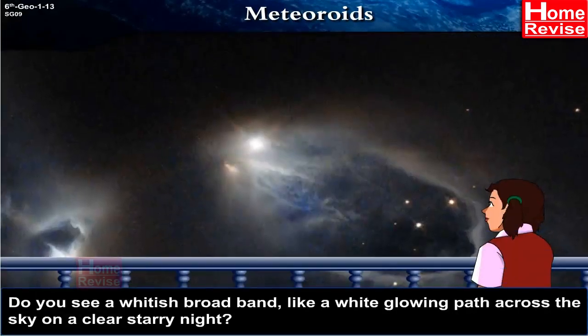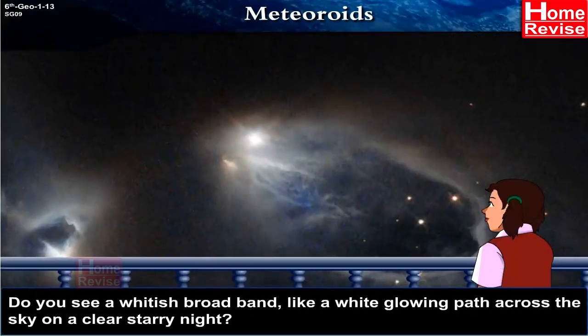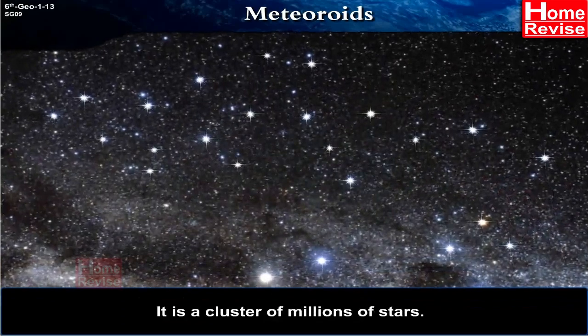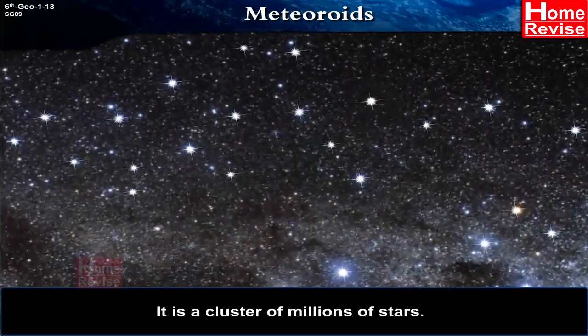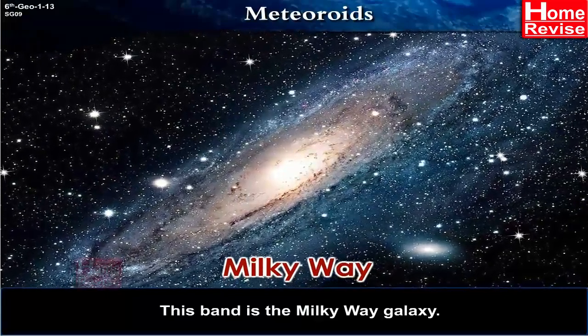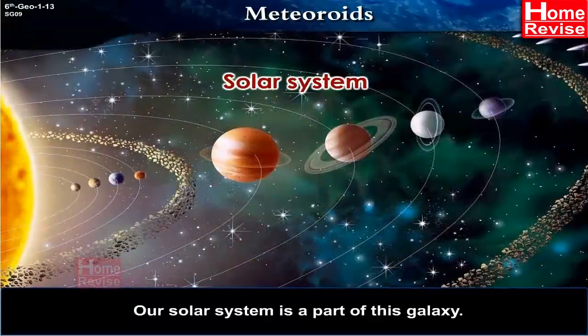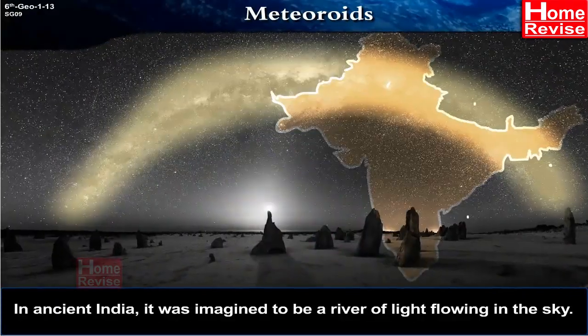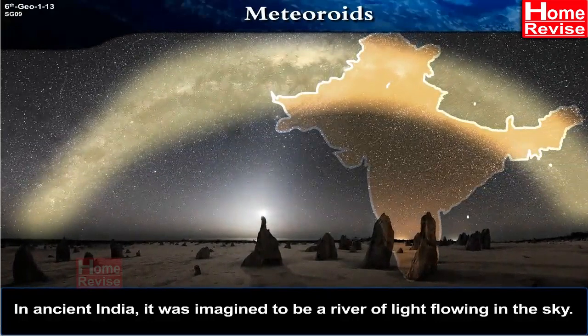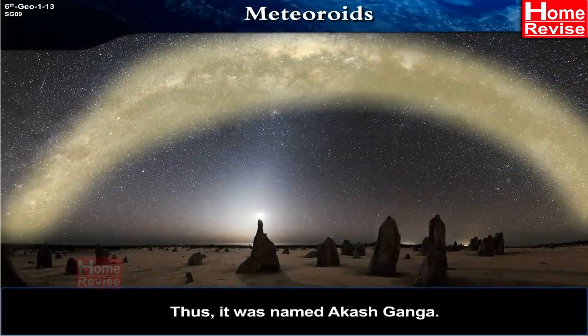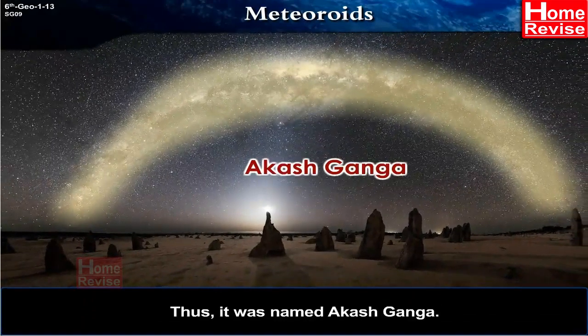Do you see a whitish broad band like a white glowing path across the sky on a clear starry night? It is a cluster of millions of stars. In ancient India, it was imagined to be a river of light flowing in the sky. Thus, it was named Akash Ganga.